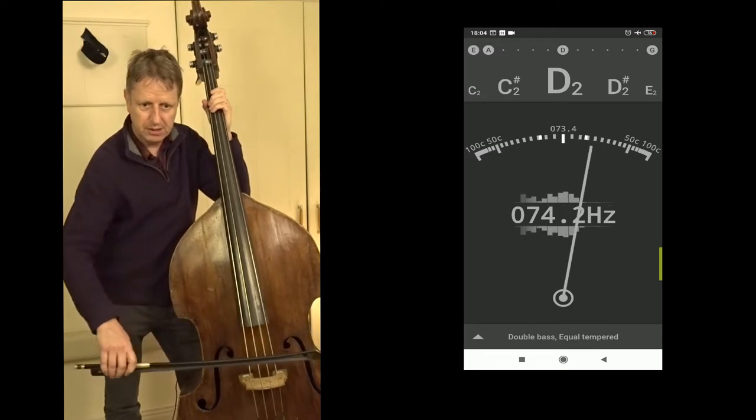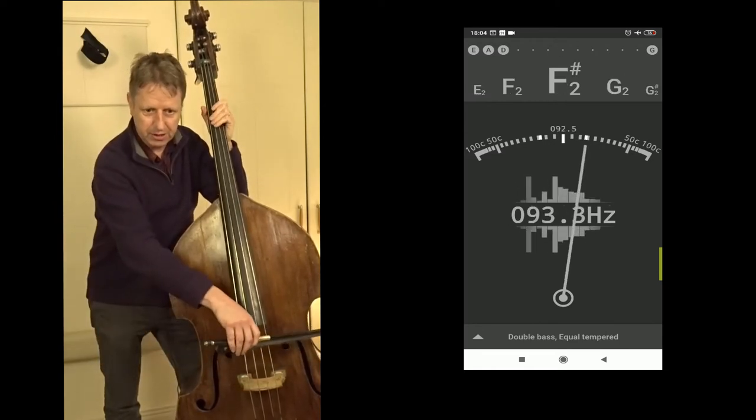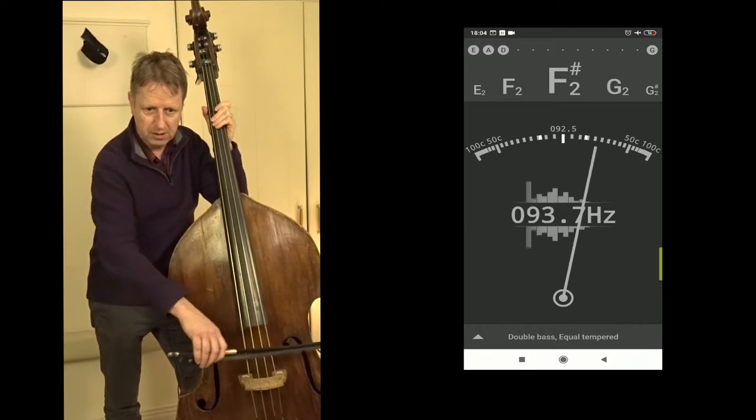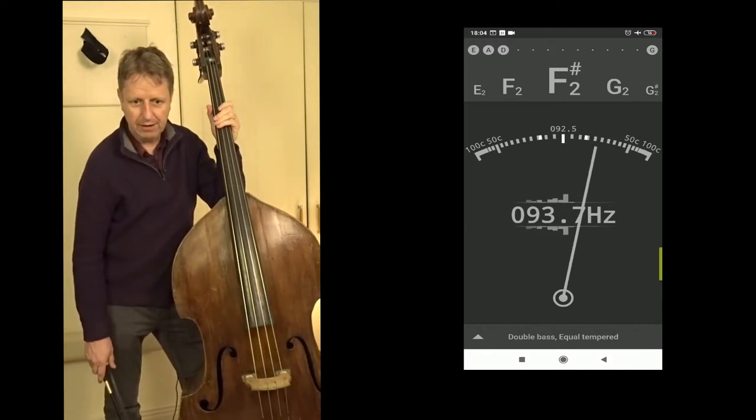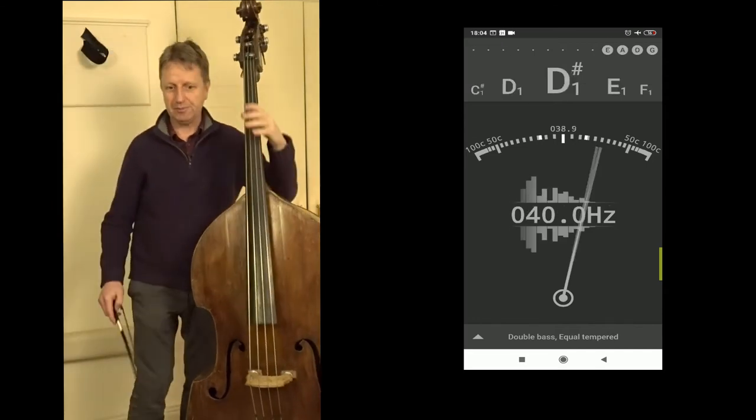D a little bit off to the right, and this should be G but something has happened and it's just reading F sharp. Okay, so let's start with the E string, let's start with the lowest.